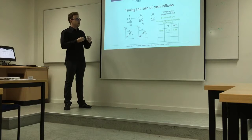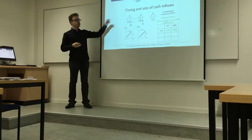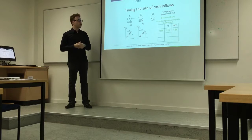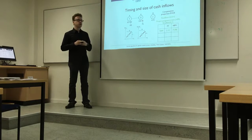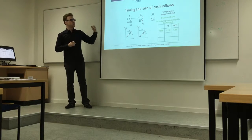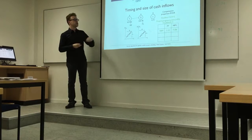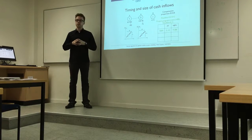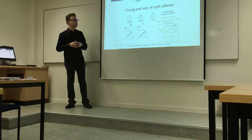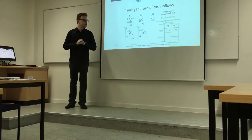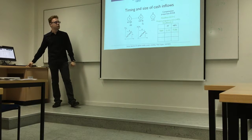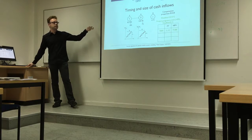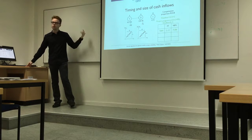To determine the project's net present value, we first determine payment times. For two payments with a project deadline of 10, payment times are found by dividing the deadline by the number of payments: 10 divided by 2 equals 5. The resulting NPV is 75.88. This is exactly equivalent to the progress payments discussed earlier, for those following closely.